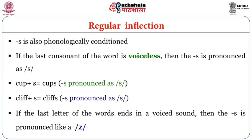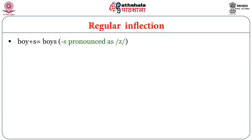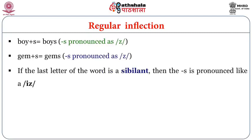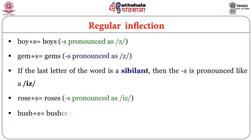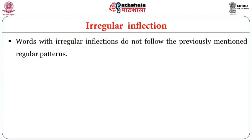If the last letter ends in a voiced sound, S is pronounced like Z, as in 'boys' or 'gems'. If the last letter is a sibilant, S is pronounced like 'iz', as in 'roses' or 'bushes'. So S is also phonologically conditioned, and understanding this tells us how to pronounce these words correctly.